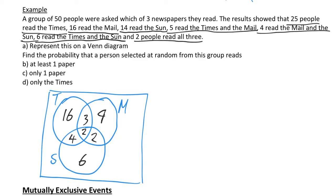The last thing a lot of people forget: there are 50 people in total. Add up all the numbers — 16 plus 3 plus 2 plus 4 plus 6 plus 2 plus 9 — take it away from 50, and you should get 8 people outside all three circles. That is the hard bit of the question done. Start with all 3 in the middle and work outwards, and you should be able to get there.